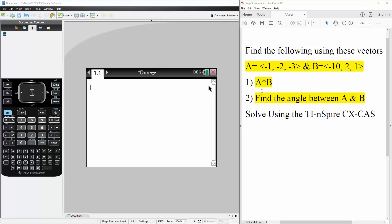We want to find the dot product of A and B, and we also want to find the angle between A and B.